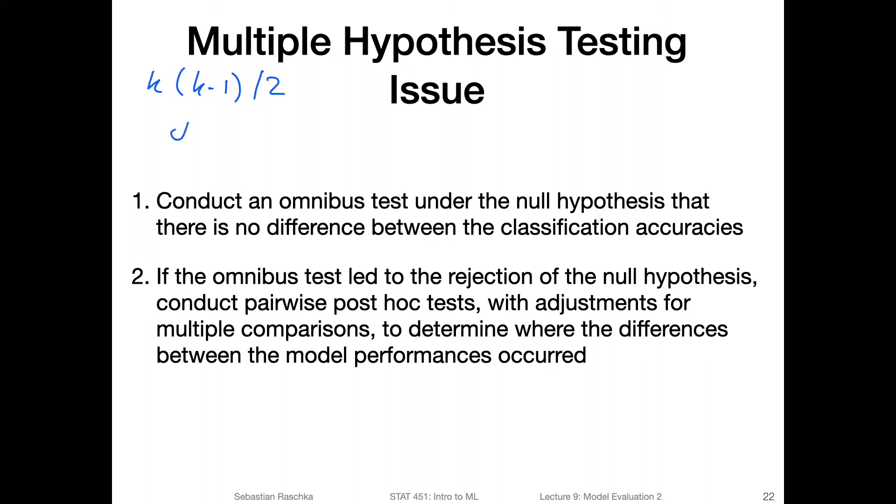Usually when we do hypothesis tests, we use a significance level of point oh five or smaller. That means that if the null hypothesis is true, 5% of the time we reject the null hypothesis, but we make an error when we reject this, so we have a 5% error rate of incorrectly rejecting the null hypothesis.